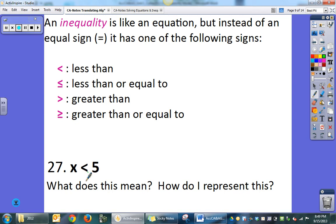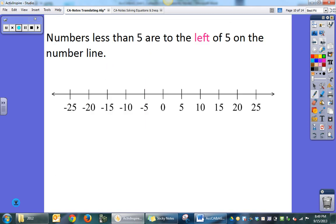Alright, so x is less than 5. What does this mean, and how do I represent this? This is just an inequality. We haven't looked at solving them yet. But x is less than 5 means any value smaller than 5. And how do I represent this? Well, I would represent them on a number line. So I have all of the values that are less than 5. So again, here's 5.